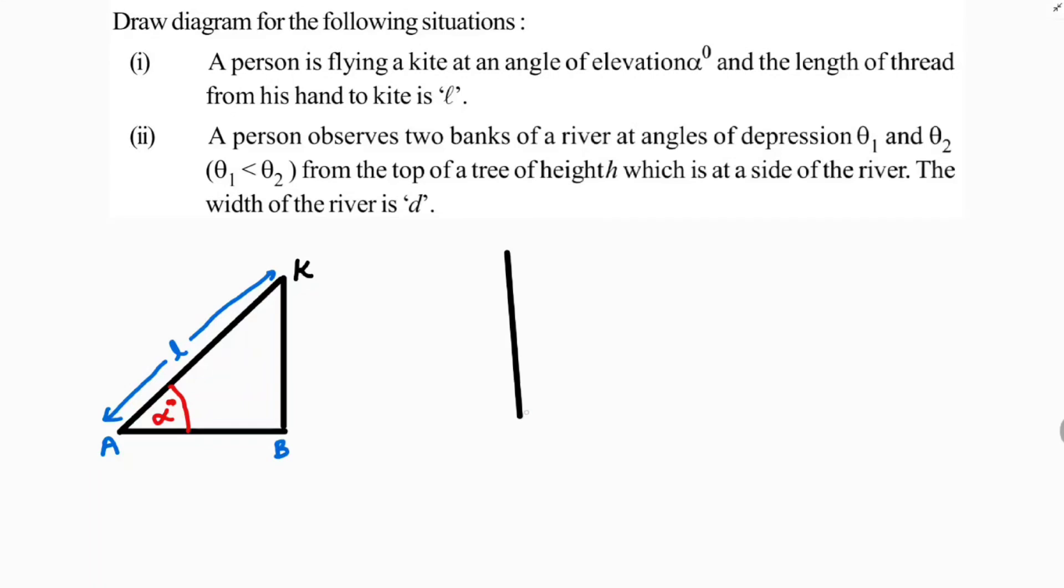He observes two banks of a river. So from the top of a tree, he observes two banks of a river. So one is here, the other one is over here. Angle of depression. So see, this angle theta 1 is greater. So this one, theta 1 is less than theta 2, so theta 2 is greater. So this angle is greater.